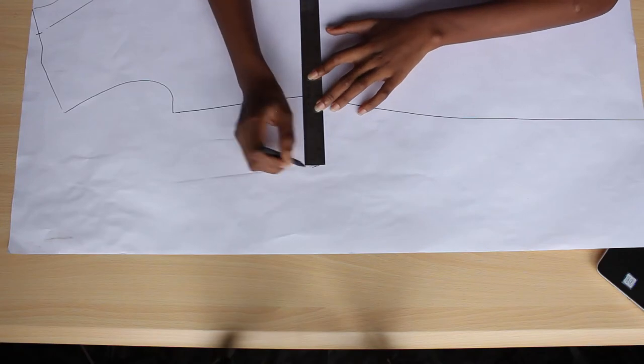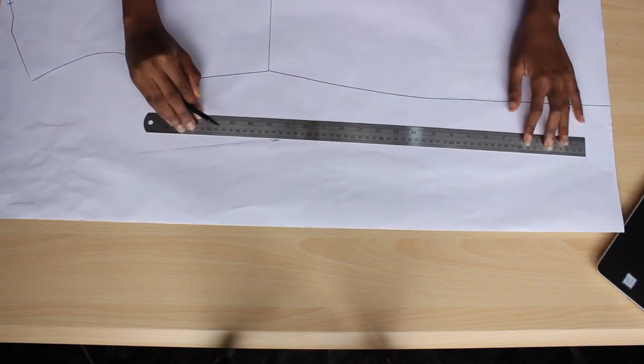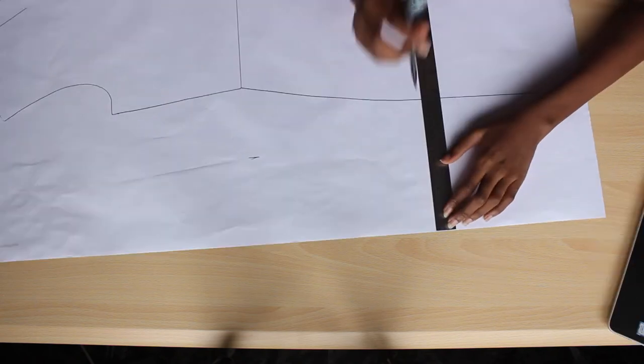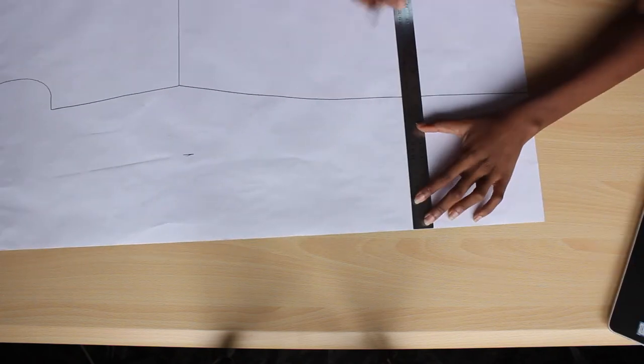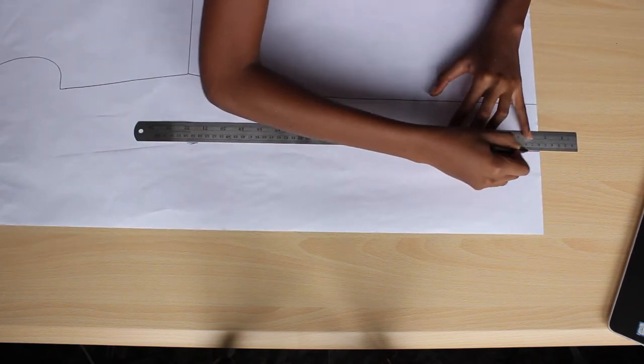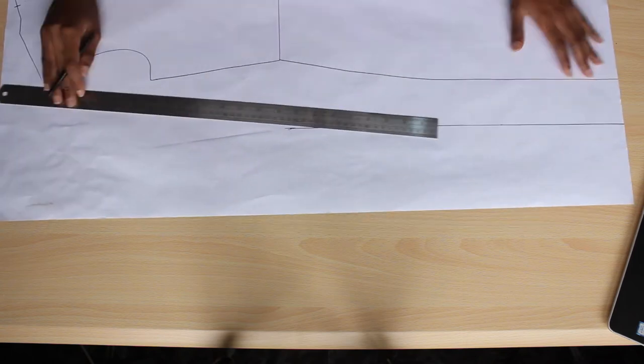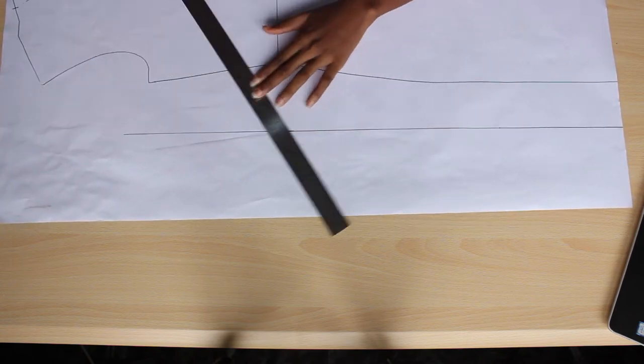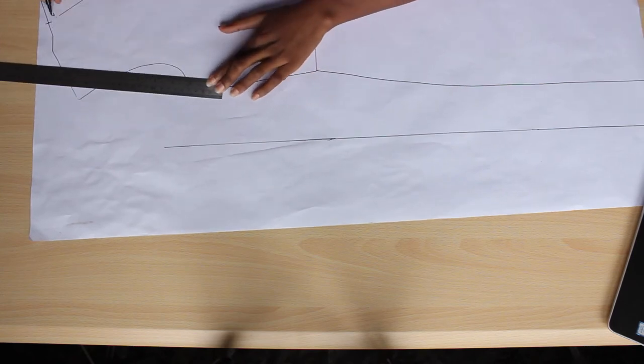I'm going to extend my waist by 10 centimeters and I'm just using the edge of my paper as a guide here so that I can achieve a straight line. Then I'm going to just square down from the waist down to the hem and then square up from the waist to the shoulder.